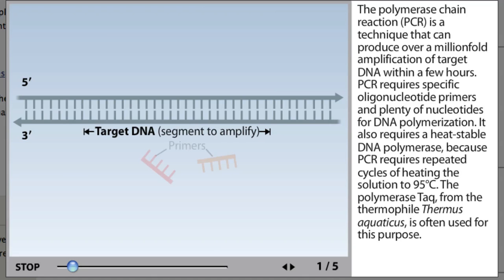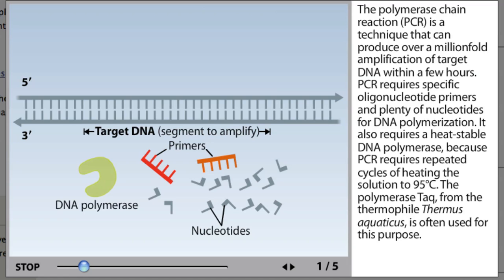PCR requires specific oligonucleotide primers and plenty of nucleotides for DNA polymerization. It also requires a heat-stable DNA polymerase because PCR requires repeated cycles of heating the solution to 95 degrees Celsius. The polymerase Taq from the thermophile Thermus aquaticus is often used for this purpose.